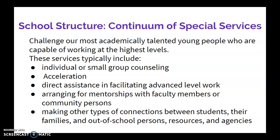The third school structure is a continuum of special services, designed to challenge the most academically capable young people who are capable of working at the highest level. This involves setting up and promoting student, faculty, and parental involvement in special programs. Another type of direct assistance consists of arranging out-of-school involvement for individual students in summer programs, on-campus courses, special schools, theater groups, scientific expeditions, and apprenticeships — places where truly advanced level learning opportunities are available for these students.